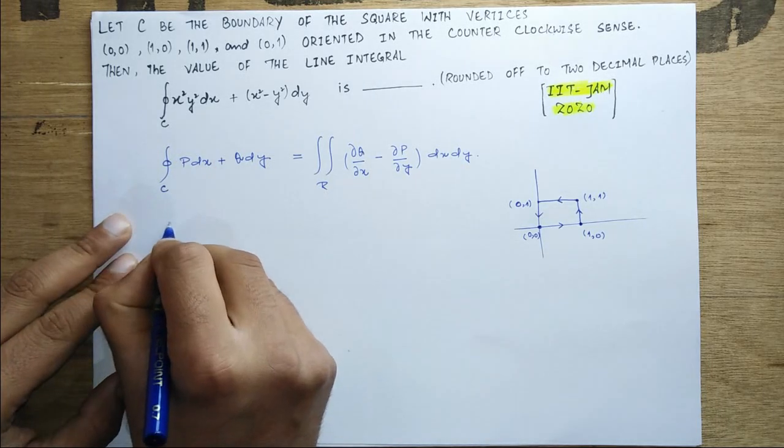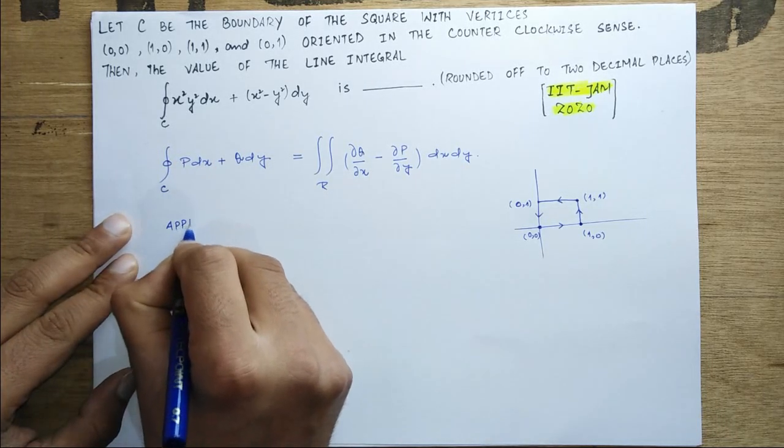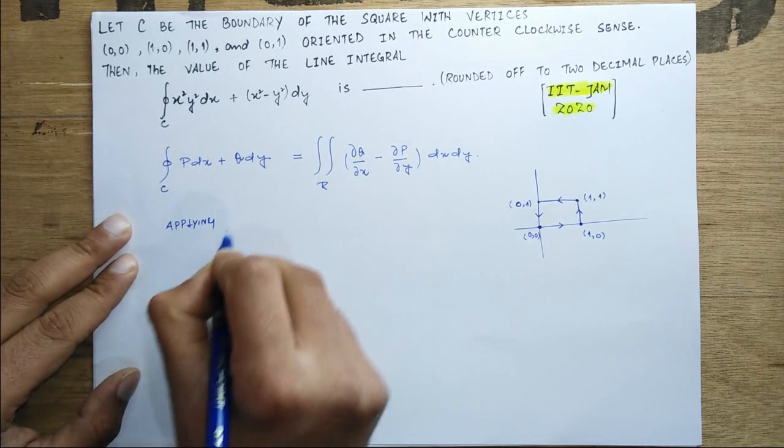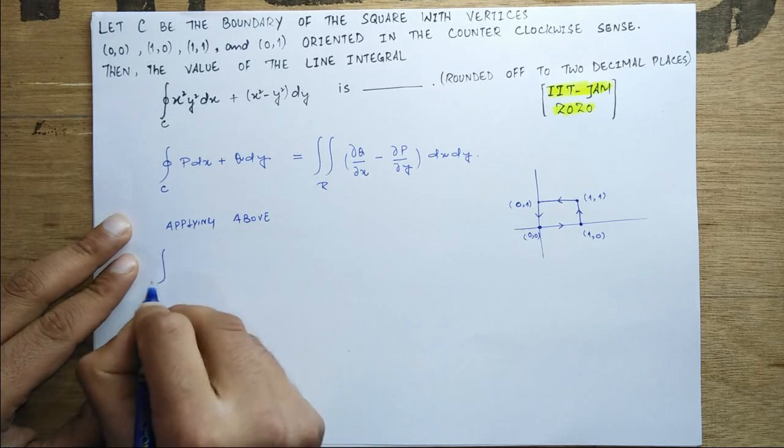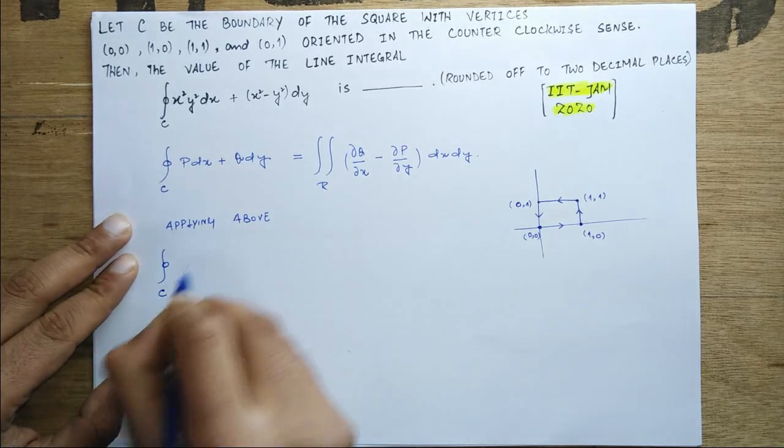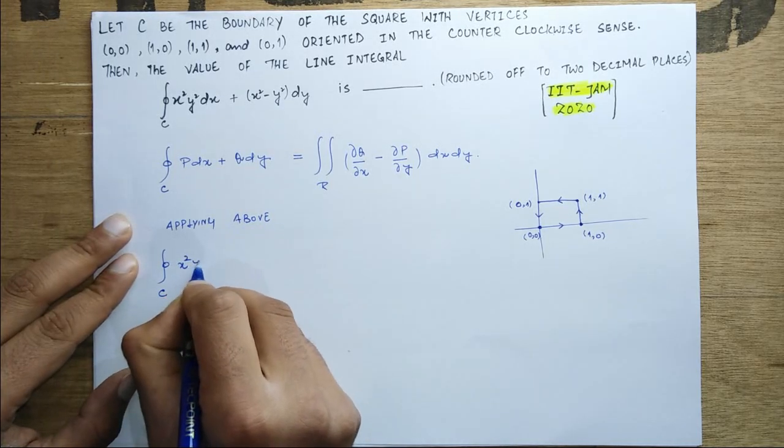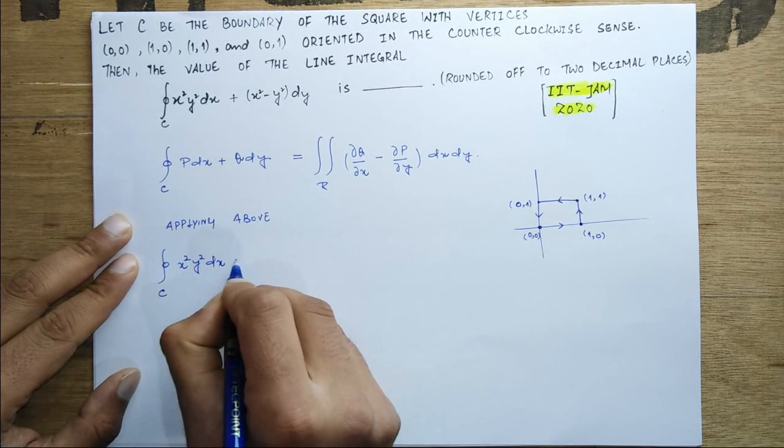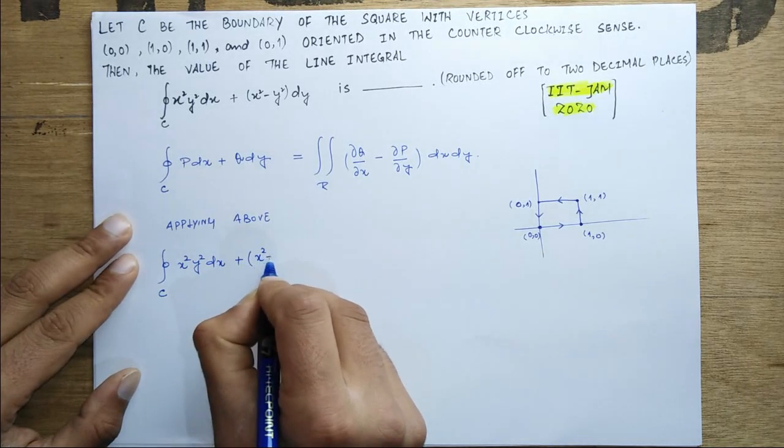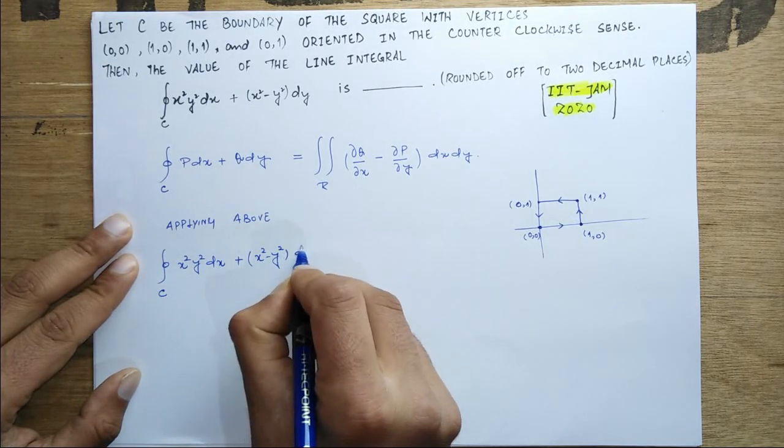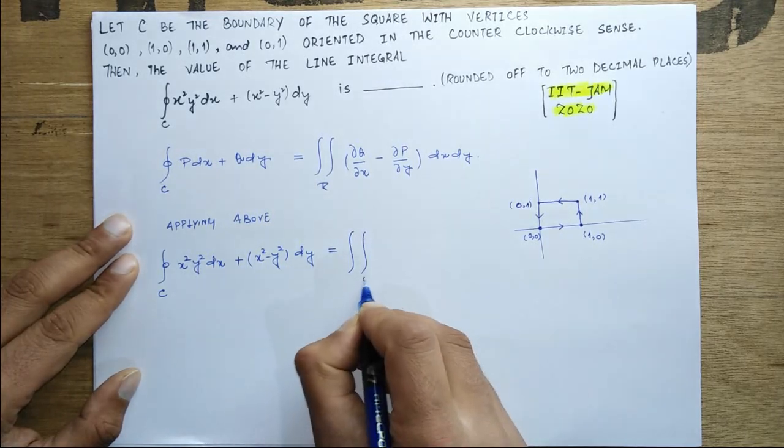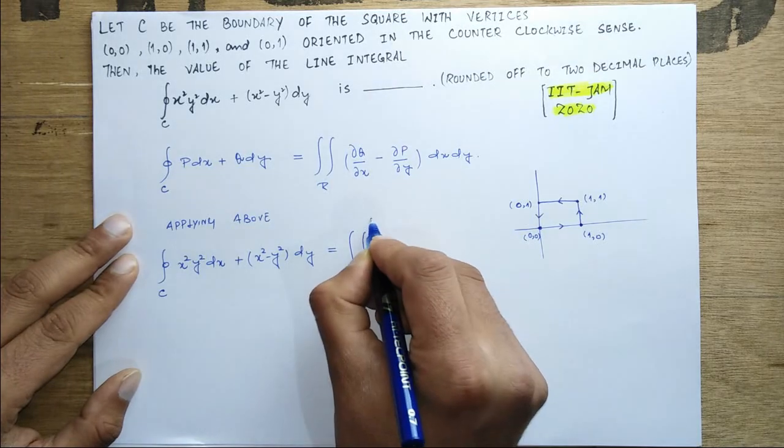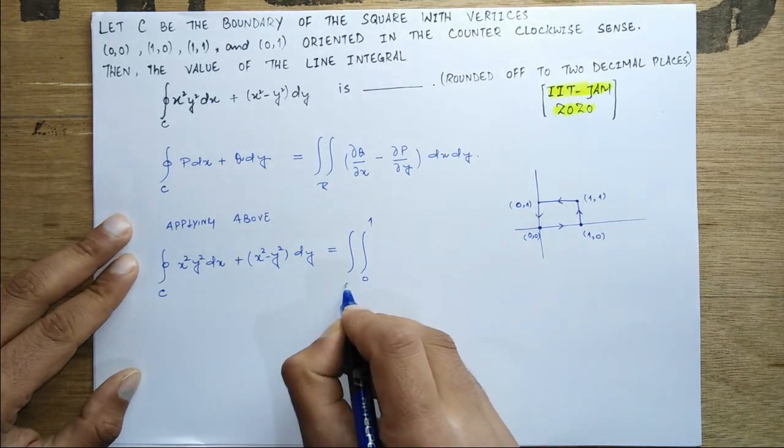Applying the above, what you will get is the integral over C of x² y² dx plus (x² - y²) dy will equal. So the region is from 0 to 1, x goes from 0 to 1, y goes from 0 to 1.